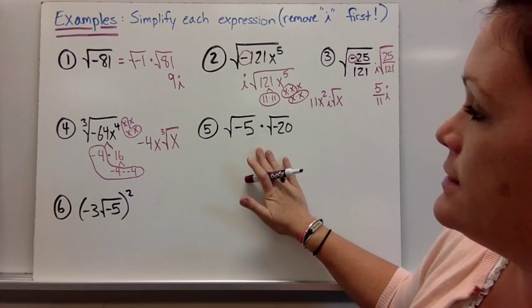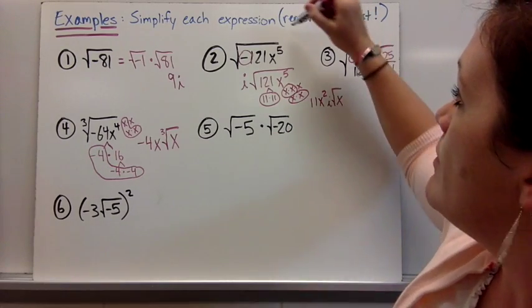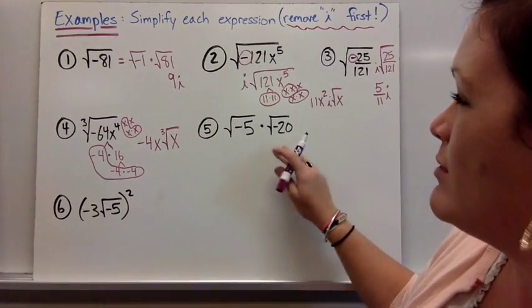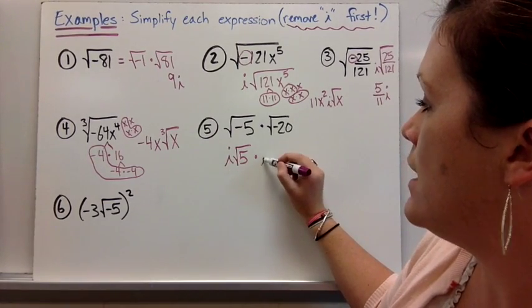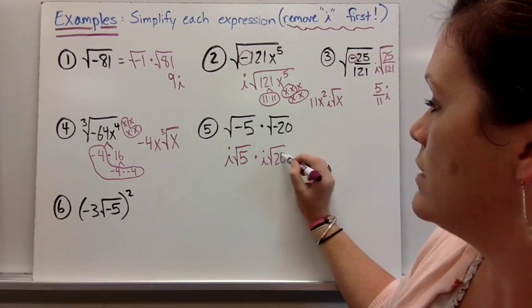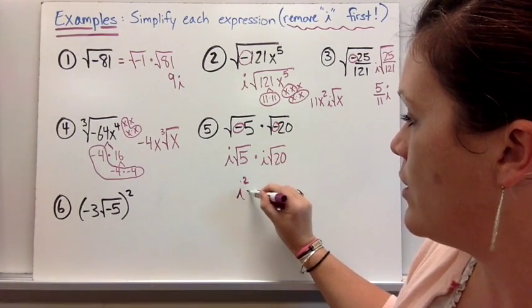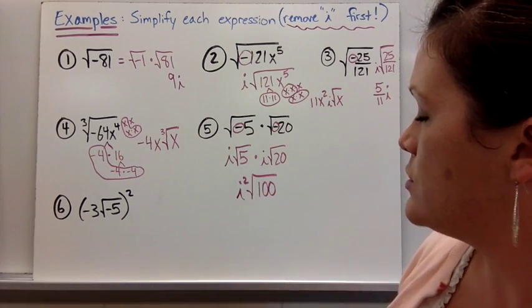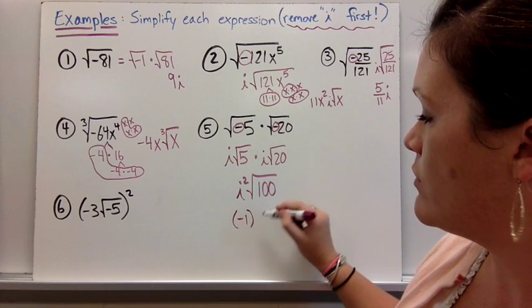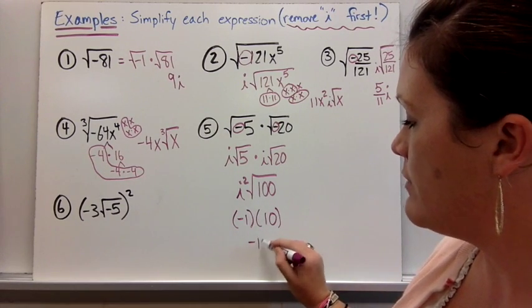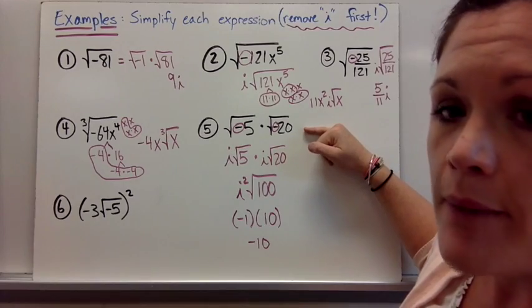On number five, this is important: do not multiply the two radicals together first to get the square root of 100 and say that equals 10. Remember to remove your i's first — they are given in the problem and you need to keep them until they clean up otherwise. So we have i·√5 times i·√20. Take those out as i's, then multiply to get i squared times the square root of 100. i squared equals negative 1, and the square root of 100 equals 10, so the final simplified answer is negative 10. You wouldn't have that negative 10 if you had multiplied the radicals directly — and that's important.